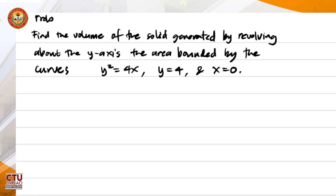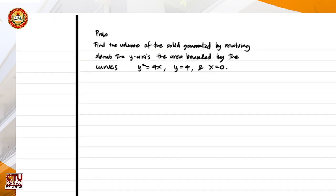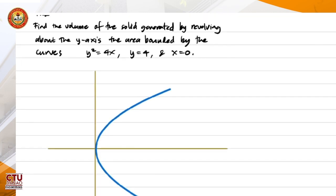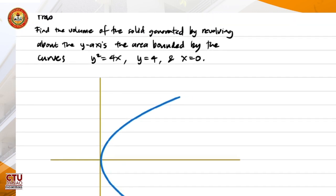This is a parabola opening to the right, so let's draw it. It would look like this, with vertex at the origin. Then we also have this line, y is equal to 4, so that would be just a horizontal line.